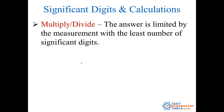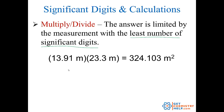So when you multiply and divide, the rule says that the answer is going to be limited by the measurement with the least number of significant digits. Let's say I have this calculation: 13.91 meters multiplied by 23.3 meters.